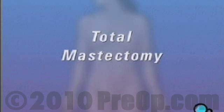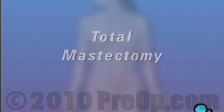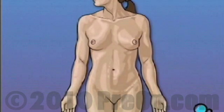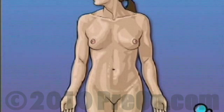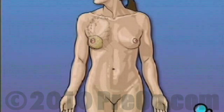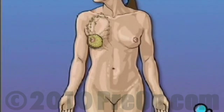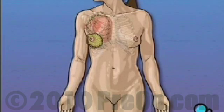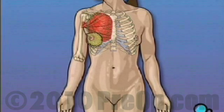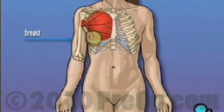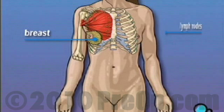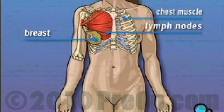Your doctor has recommended that you have a total mastectomy, but what does that actually mean? Total mastectomy is the removal of the breast. In most cases, mastectomy is required in order to remove cancerous tissue from the body. The extent of the tissue removed is determined by the amount of cancer present. A total mastectomy involves the removal of the breast, but not the removal of lymph nodes or chest muscle that lies underneath the breasts.